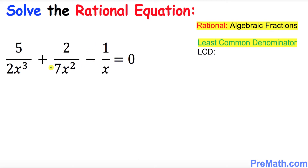In our very first step to solve this rational equation, we want to find the least common denominator. Look at the denominators only — focus on the coefficients. The coefficient here is 2, the coefficient here is 7, and the coefficient here is simply 1.